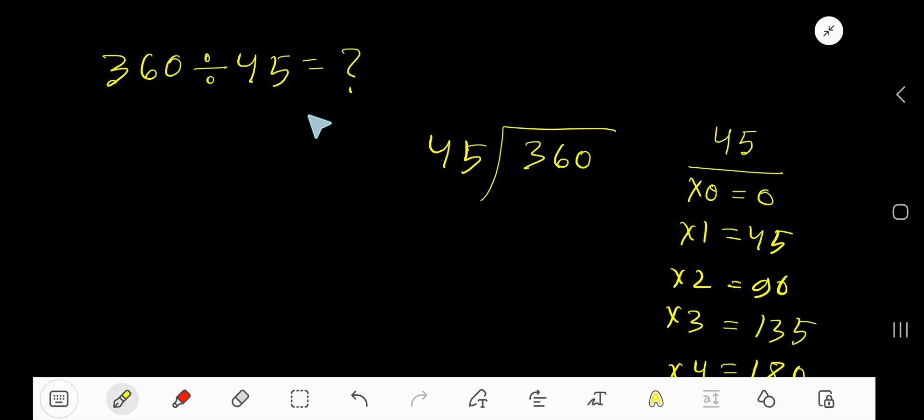360 divided by 45. Here 45 is the divisor. Let's make the multiplication table of 45. 45 times 0 equals 0, 45 times 1 equals 45, 45 times 2 equals 90, 45 times 3 equals 135.